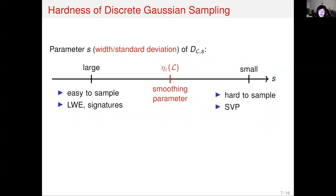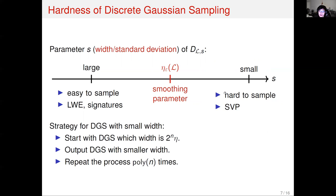First, we will show the most common strategy for DGS with small width. We can easily sample DGS with very large width, so at the very beginning we sample lots of DGS samples with large width. Then we try to use those samples to combine new discrete Gaussian samples with smaller width. By repeating this procedure polynomially many times, we can achieve DGS with arbitrarily small width.